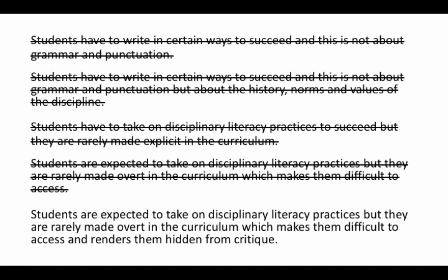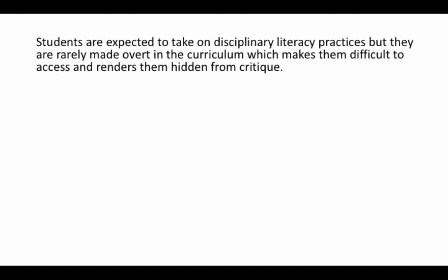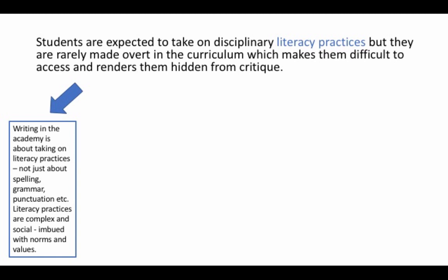'...and renders them hidden from critique.' So in order to make this big argument, I had to spend a number of pages and chapters building up the smaller arguments that constitute this bigger argument. There is my overarching thesis statement as I finally had it. But I first had to make an argument something like: 'Writing in the academy is about taking on literacy practices — not just about spelling, grammar, punctuation, etc. Literacy practices are complex and social; they are imbued with norms and values.' I had to begin by convincing my reader that this is what writing is about in the academy.